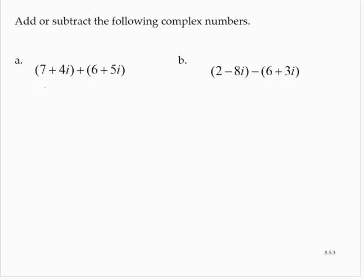In practice, to add complex numbers, we combine the real parts and we combine the imaginary parts. So this is the same as 7 plus 6, plus 4 plus 5i. And so that's 13 plus 9i.